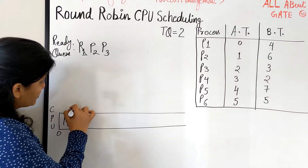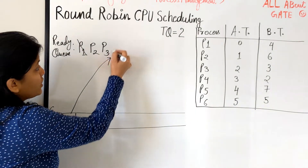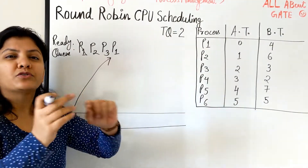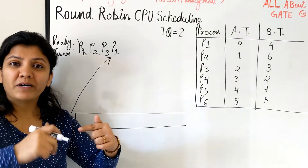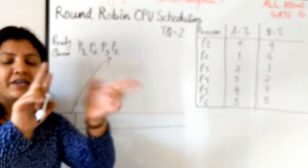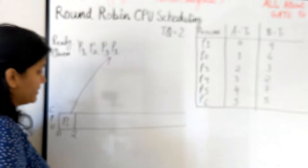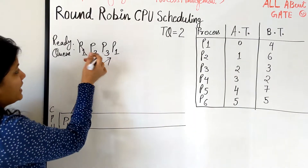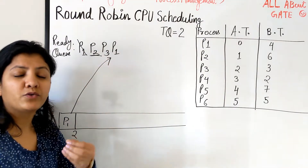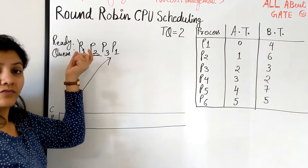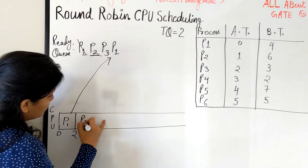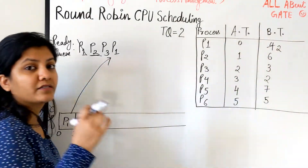P1 has not finished yet, so it also goes back to the end of the ready queue. Every time a process finishes its quantum and needs more burst, it goes at the end of the ready queue — not at the beginning or in between. Now we see who is next in the queue. Since it's a FIFO queue — first in, first out — whoever entered first comes out first. So now it's P2's turn.